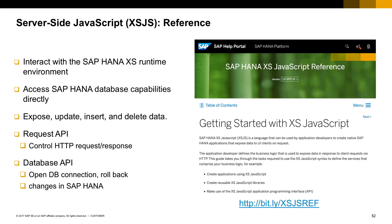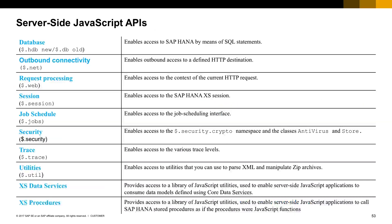For the specific XSJS functions, you can rely on the SAP HANA XS JavaScript reference guide. It is hosted on the SAP help portal, and there you will find several examples of how to perform different operations on SAP HANA using XSJS.